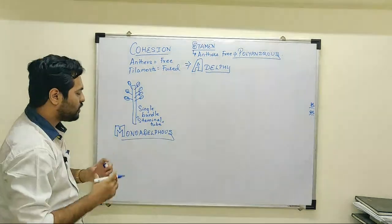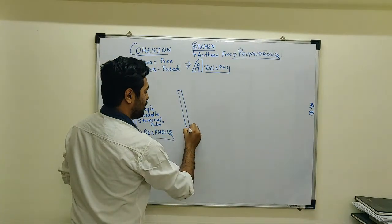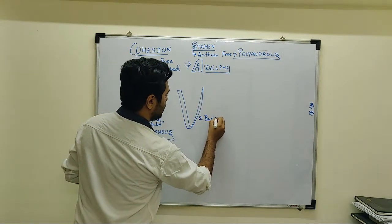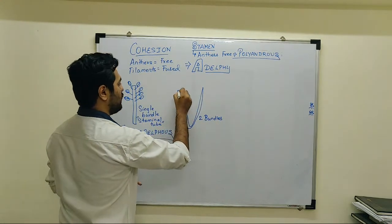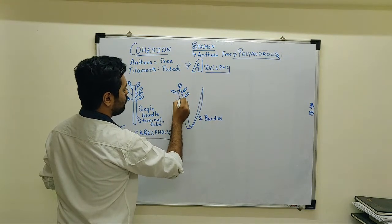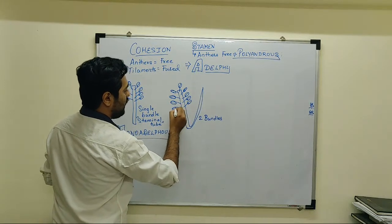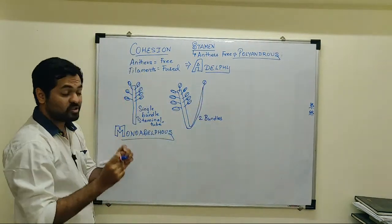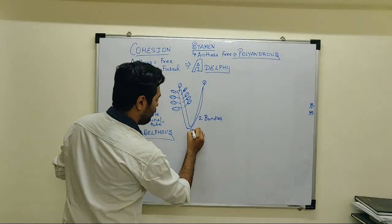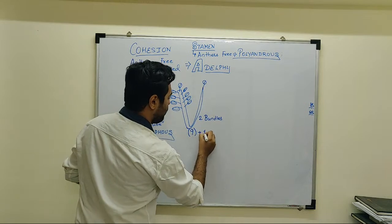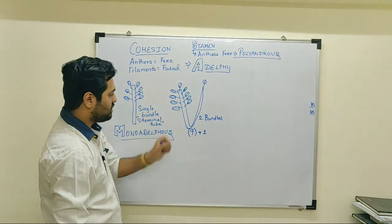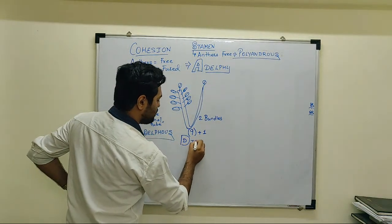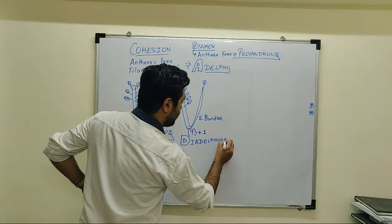Suppose in a condition two bundles of filaments are seen. So there are two bundles of filaments — filaments are fused but anthers remain free. Here anther one, second, third, fourth, fifth, sixth, seventh, eighth, and nine anthers are free, and in the other filament there is only a single anther. So this specific arrangement — where nine filaments are fused and a single filament is free, giving a nine-plus-one arrangement of ten stamens — this condition is known as diadelphous, wherein two bundles of filament are observed.